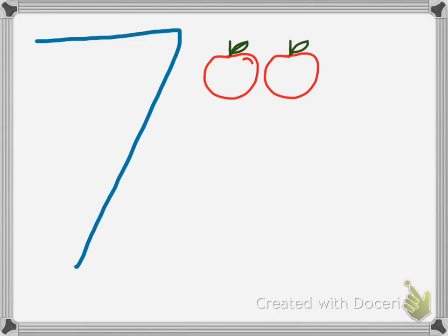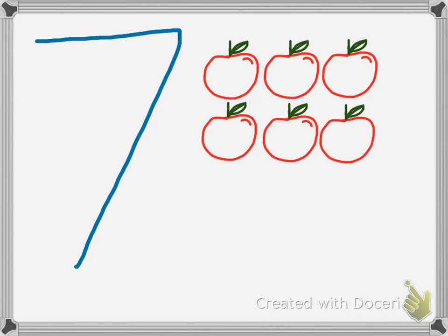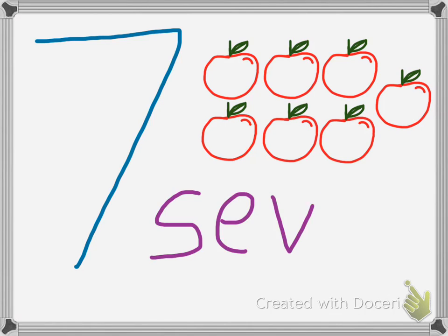And next, number 7. So now we have 1, 2, 3, 4, 5, 6, 7. Yay! 7 apples. And now we see the number in written form. 7. 7 crunchy apples.